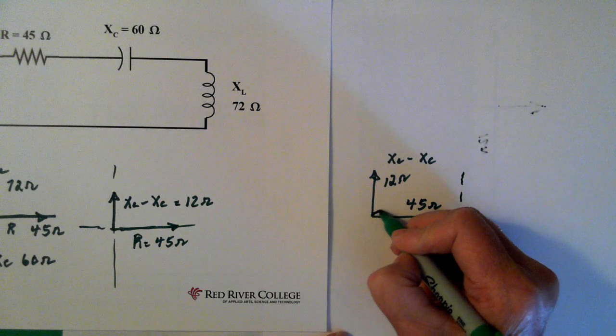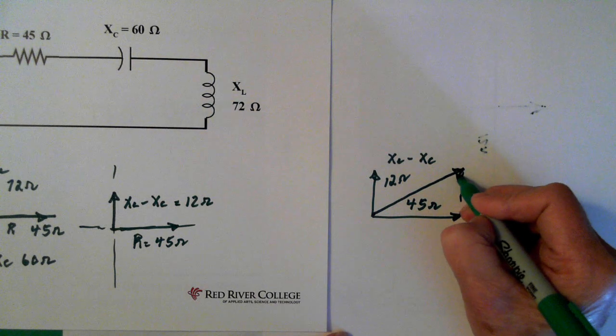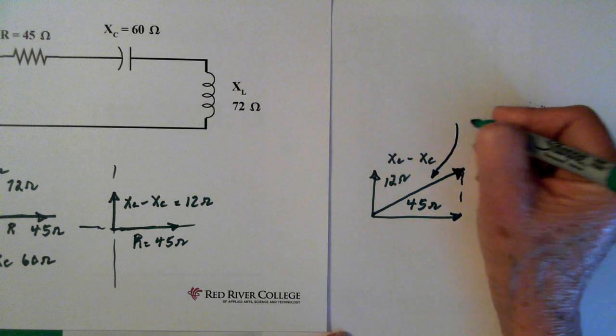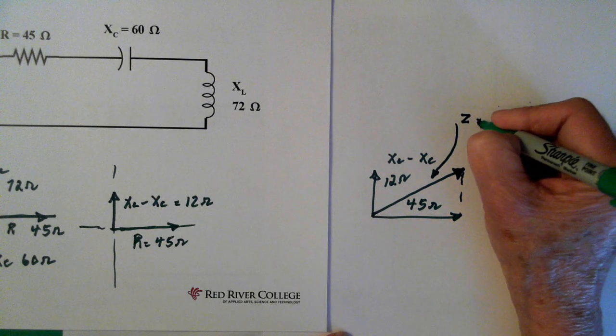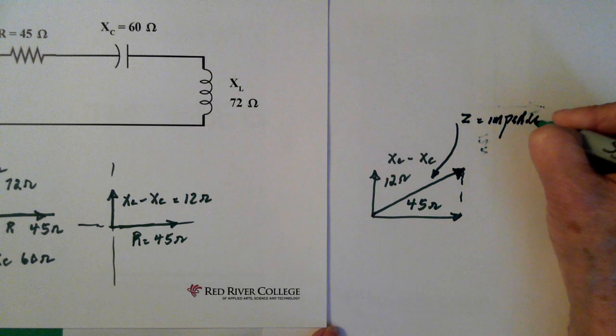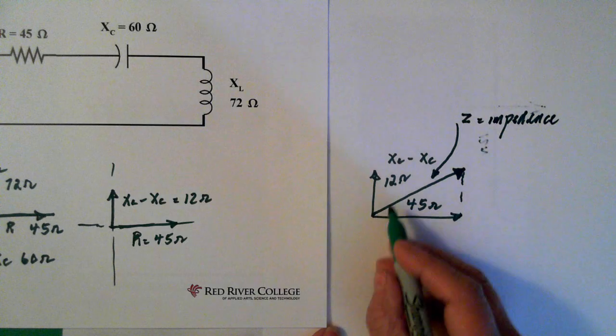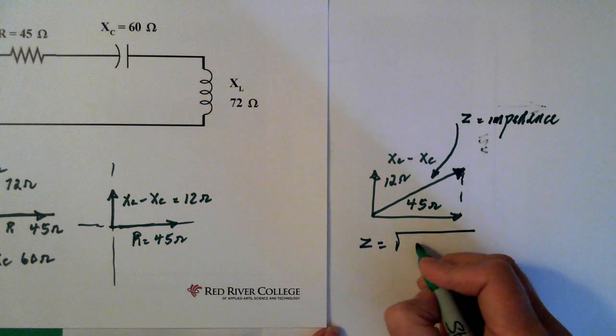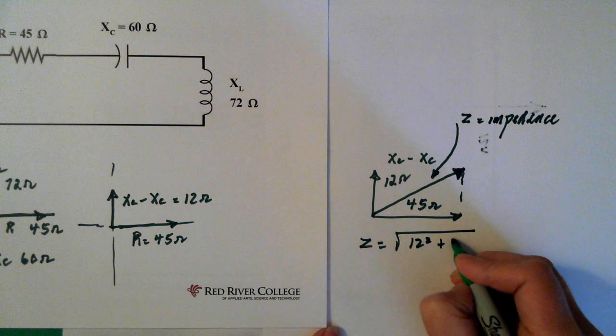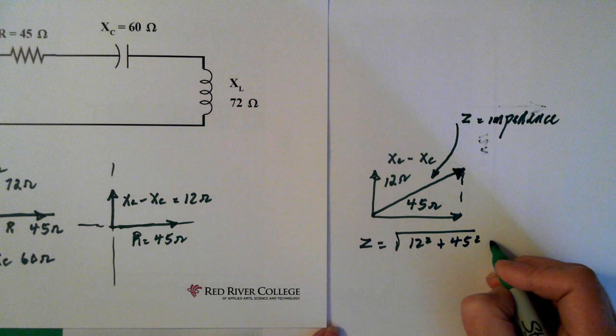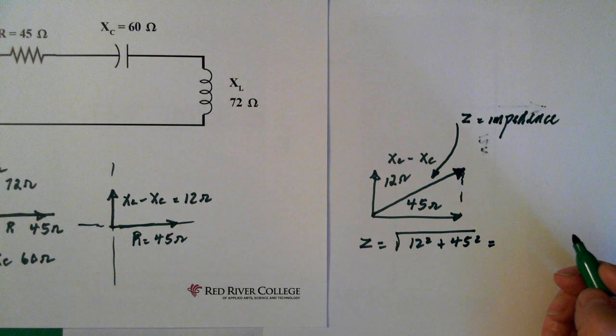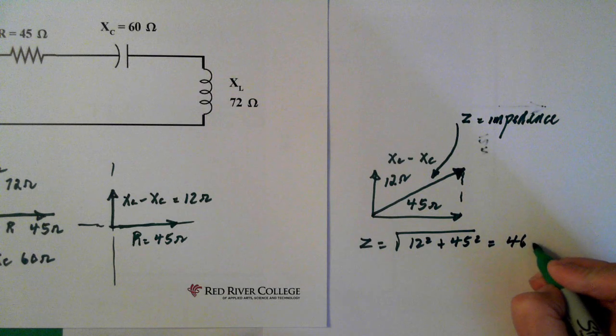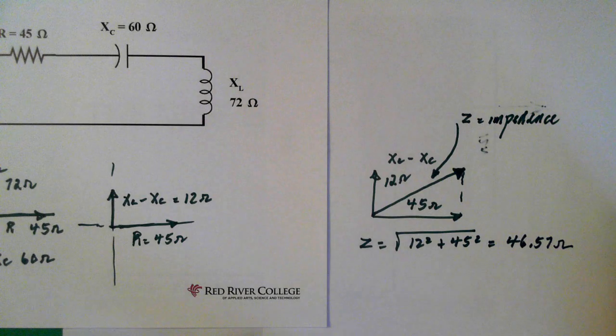You can see that in order to add these two together, we have to use Pythagoras. So this here, what we're solving for, is called Z, and that's impedance. In order to get that, we use Pythagoras. So then, our impedance equals the square root of 12 squared plus 45 squared. And we end up with 46.57 ohms. That's our impedance.